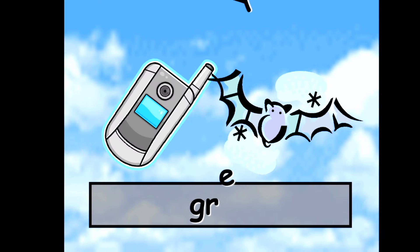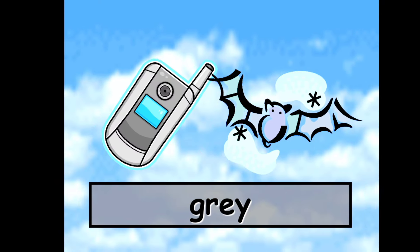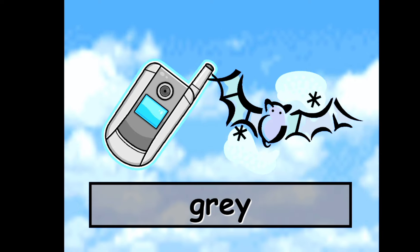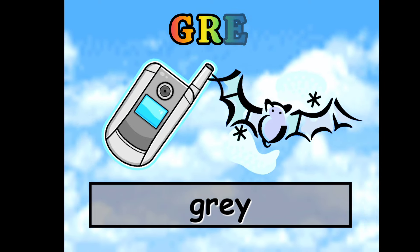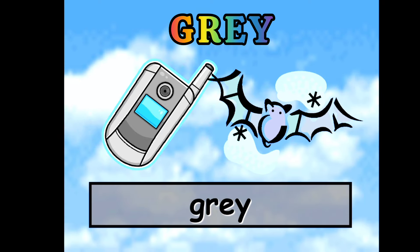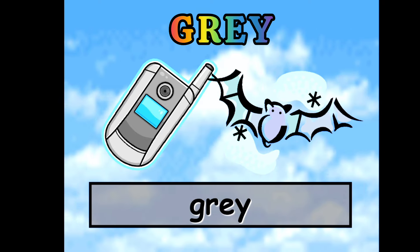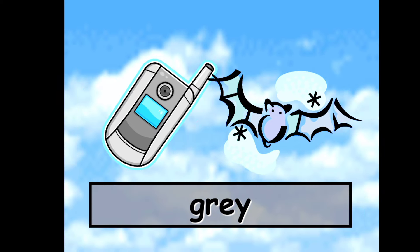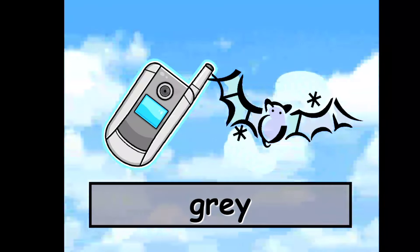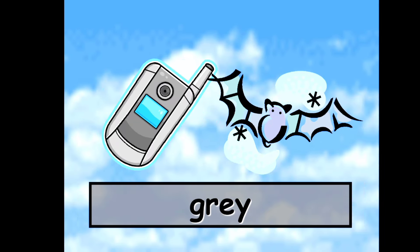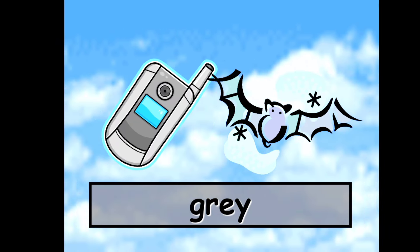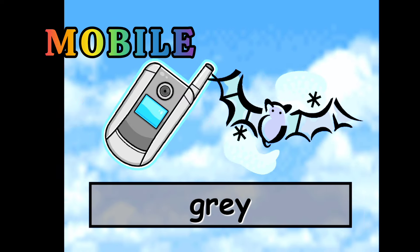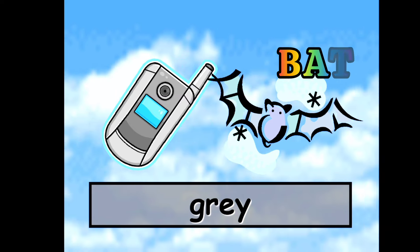Next is, this is a gray color. G-R-A-Y. Gray color. So what you can see in gray color? Gray mobile and gray bat.